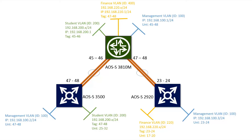The finance VLAN uses subnet 192.168.220.x. It also has tagged ports on uplinks and untagged ports on the edge switch. Finance is available on the 2920 but not on the 3500, so if devices on different switches want to communicate they need to be routed. That's where the core device comes in — it can route the packet, and later we can apply security rules.